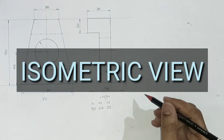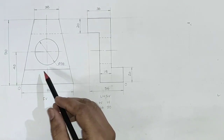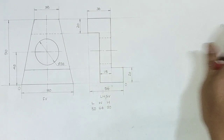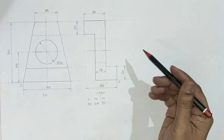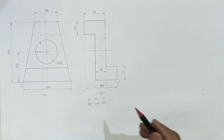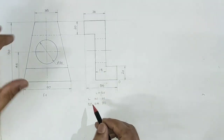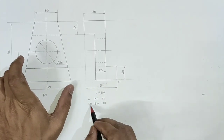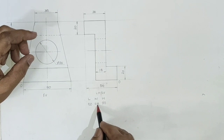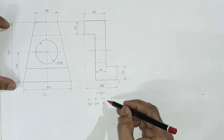Problem on isometric view. These are the two views given for an object: front view and left hand side view, and we are going to draw the isometric view. First of all, let us find the total length, total width, and total height. Total length is 80mm, total width is 54mm, and total height is 90mm.